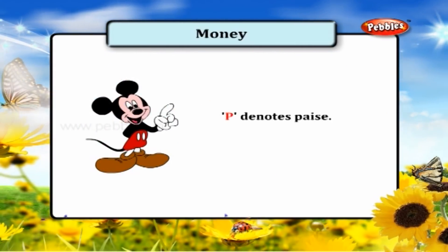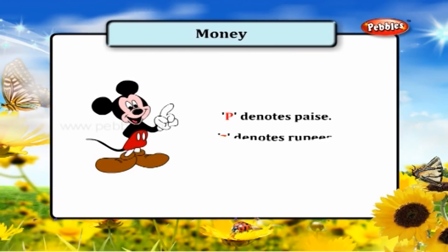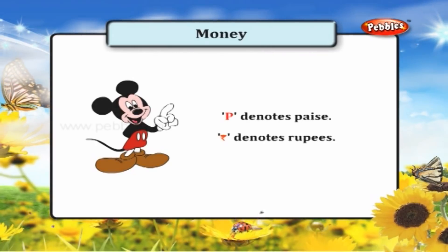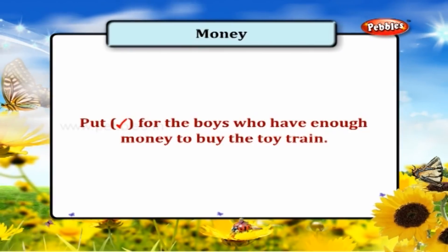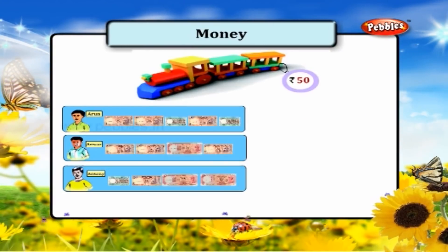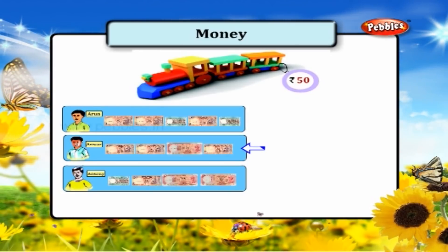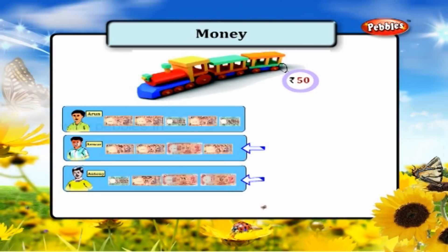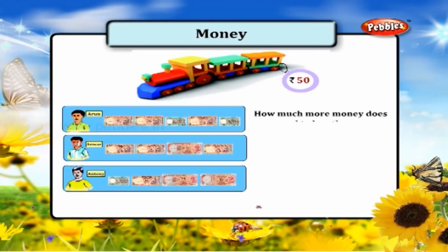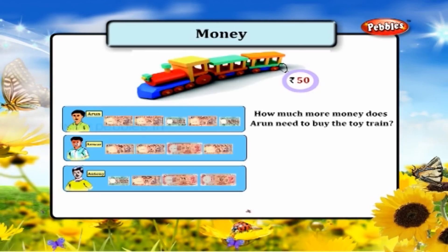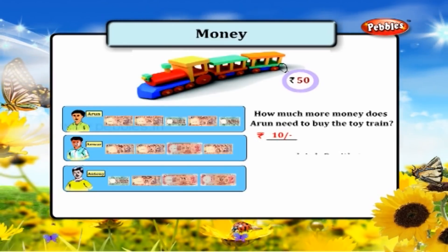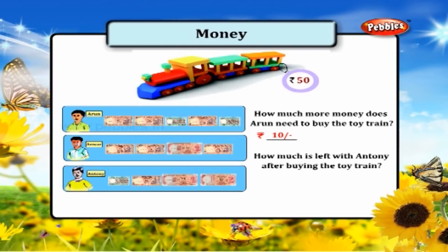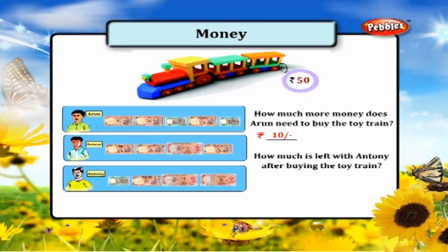P denotes paisa and the symbol denotes rupees. Put a tick mark for the boys who have enough money to buy the toy train, which costs 50 rupees. Anwar and Anthony have 50 rupees. How much more money does Arun need to buy the toy train? Rupees 10. How much is left with Anthony after buying the toy train? Rupees 5.